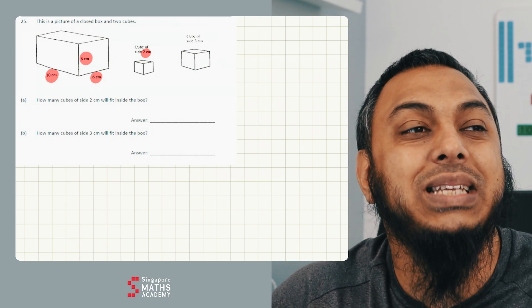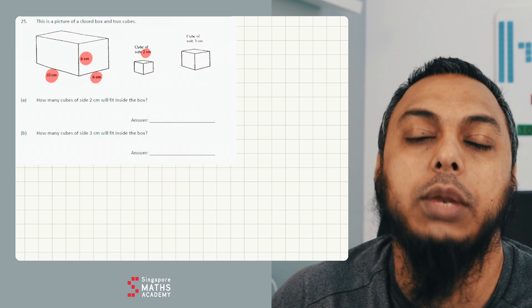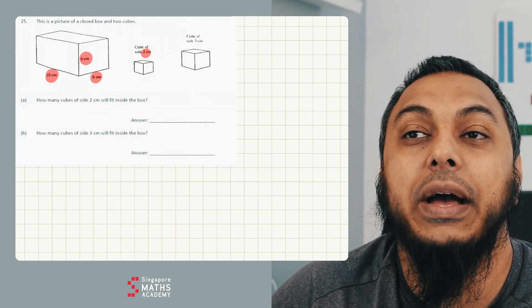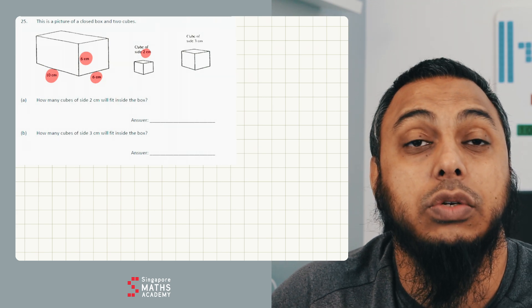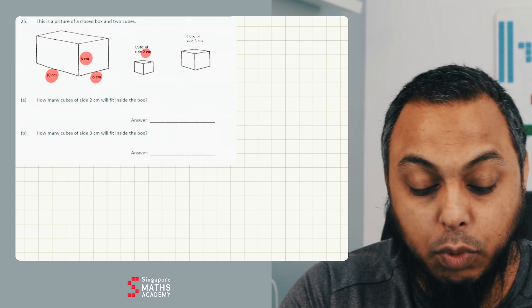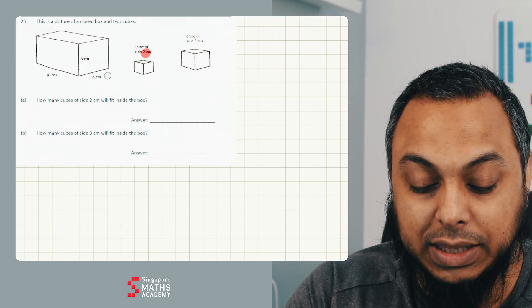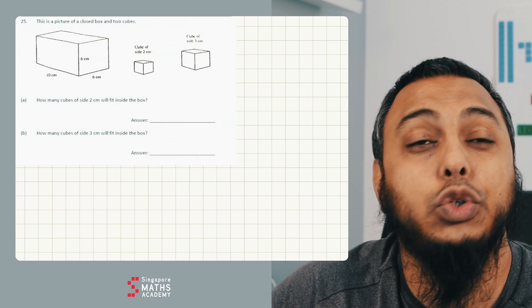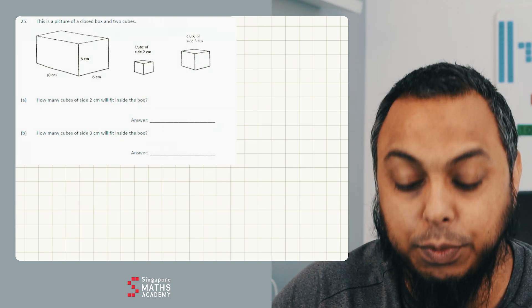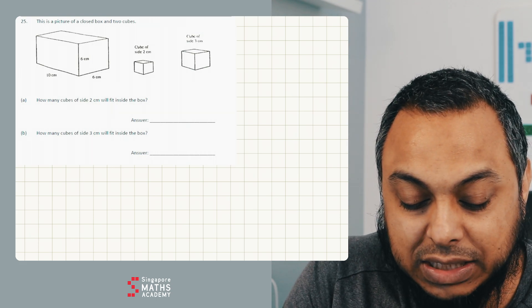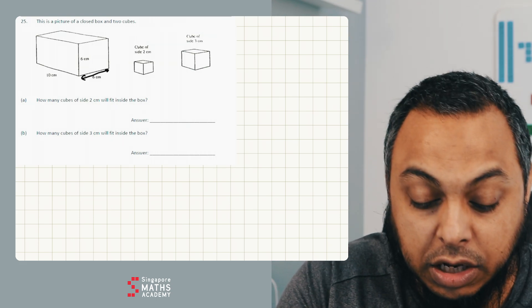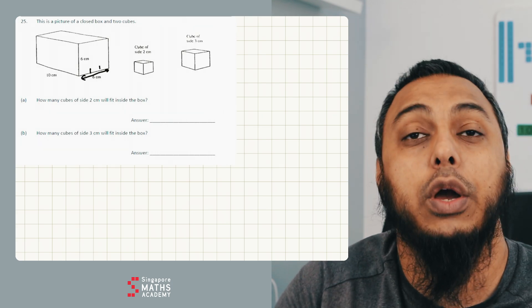But because these are small cubes and you're not going to be able to break down these cubes, we might have an answer that's not appropriate for this question. And so another more efficient way of doing this is just to check, I know it's a 2x2x2 cube, how many 2 centimetres can go across here? 6 divided by 2 is 3. So I can have 3 cubes going across.